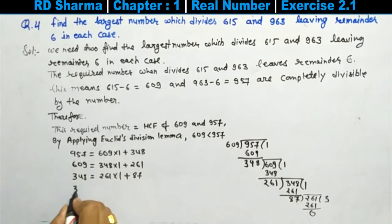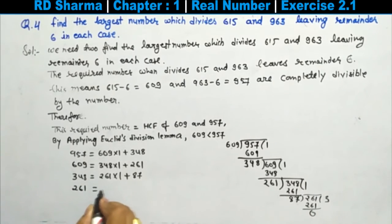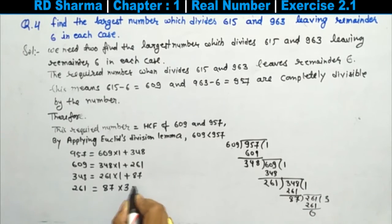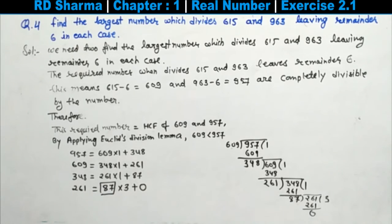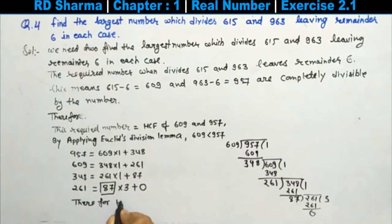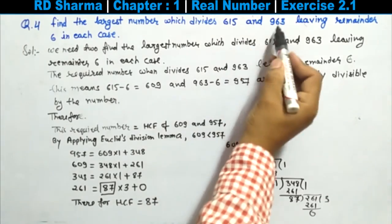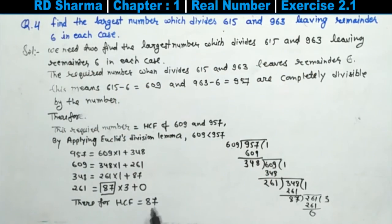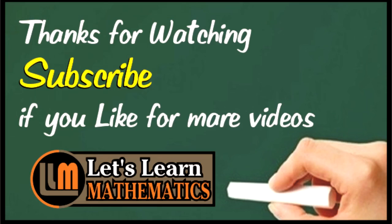Since the remainder is 0, the HCF is equal to 87. Therefore, the required number is 87. We can cross-check the answer. Thanks for watching!